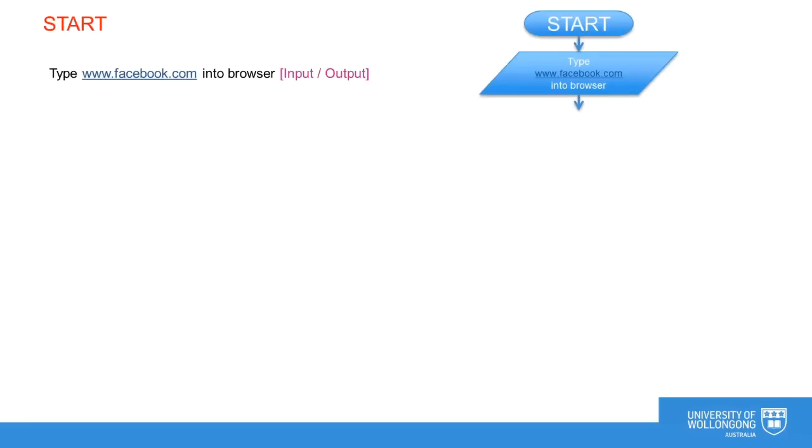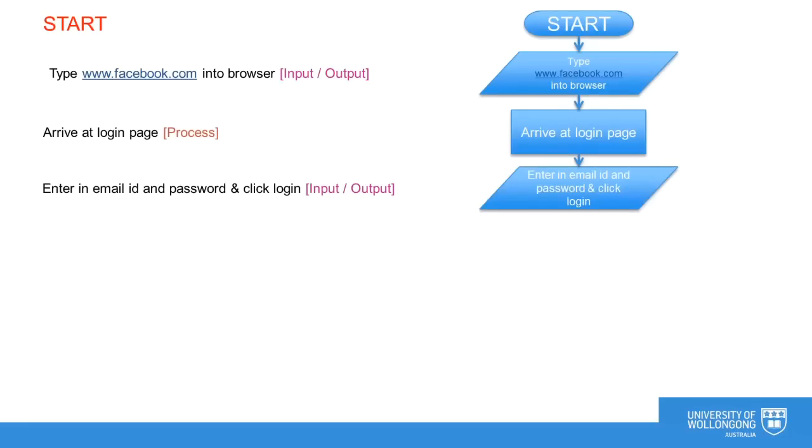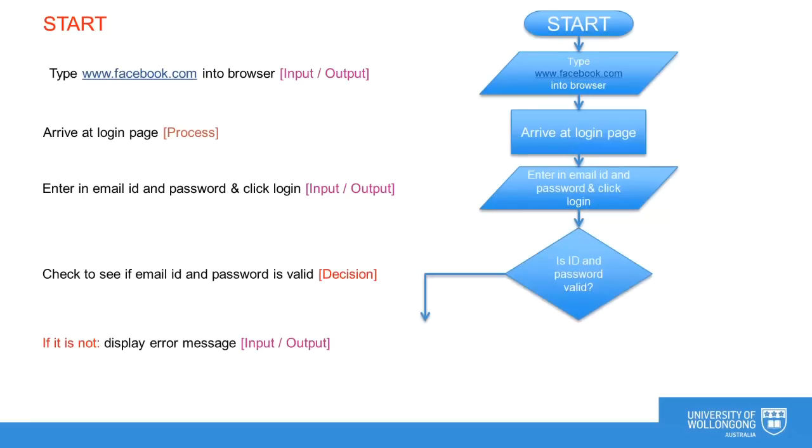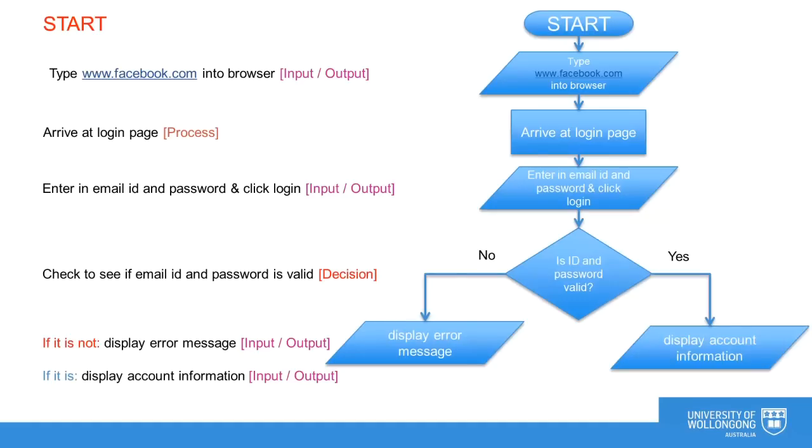To visualize this, we can now convert our pseudocode into a flowchart. Each line of our pseudocode is translated into the correct flowchart symbol. Input output processes are shown as parallelograms. Processes are shown as rectangles. And a diamond is used for making a decision. Arrow connectors are used to show the flow from the start to the end of the algorithm. As a programmer, you now have a very clear understanding of the structure of the program and the tasks you must code in your programming language of choice.